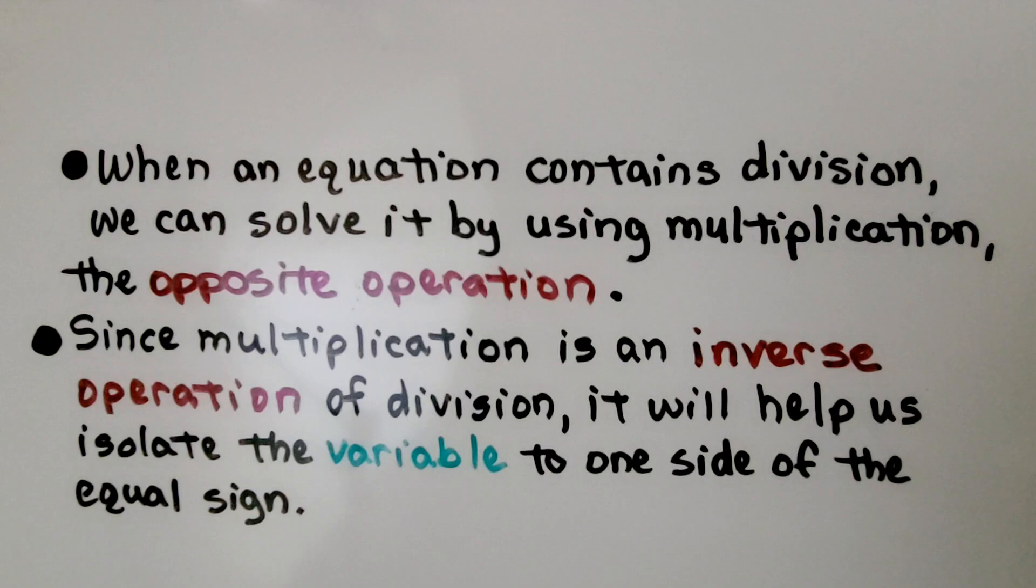When an equation contains division, we can solve it by using multiplication, the opposite operation. Since multiplication is an inverse operation of division, it will help us isolate the variable to one side of the equal sign.